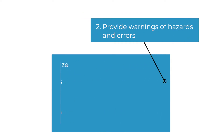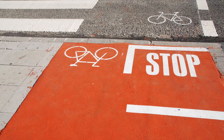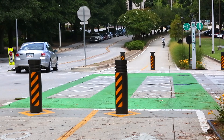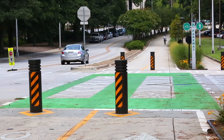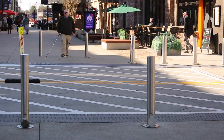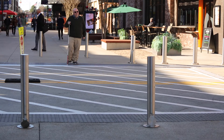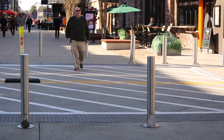Second, provide warnings of hazards and errors. By giving users of designs clear warnings about mistakes that could occur, they are more likely to use a design safely and successfully. For example, tactile warnings found at curbs are intended to warn people who use canes, placed at transitions between pedestrian areas and traffic areas. It's more of a safety issue.